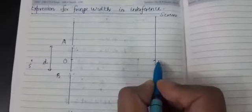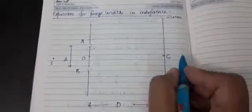The intensity of light on the screen depends upon the path difference between the two waves reaching at a point. Point C is equidistant from A and B, so the path difference between the two waves reaching at C is zero. Therefore, C will be the position of central maxima.